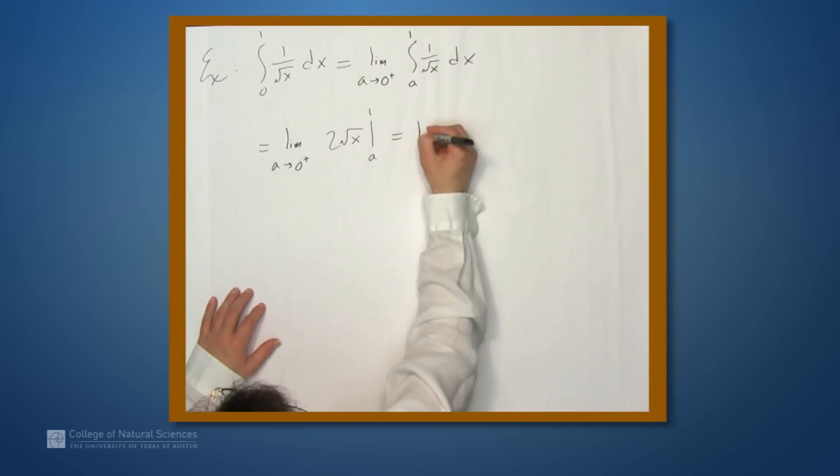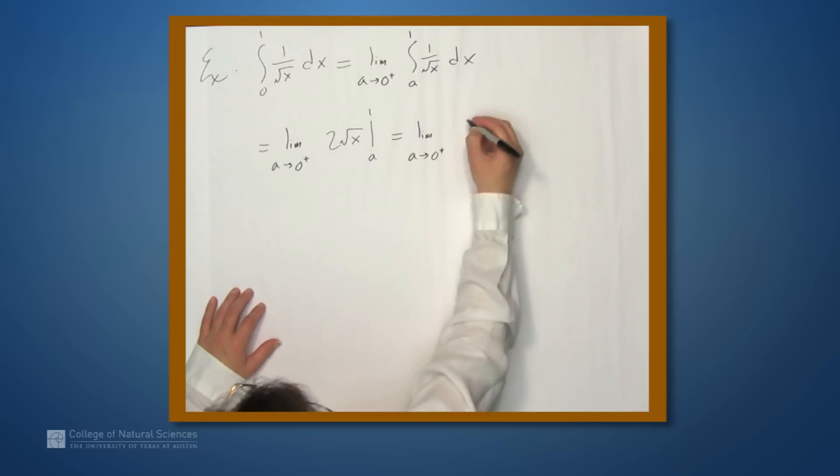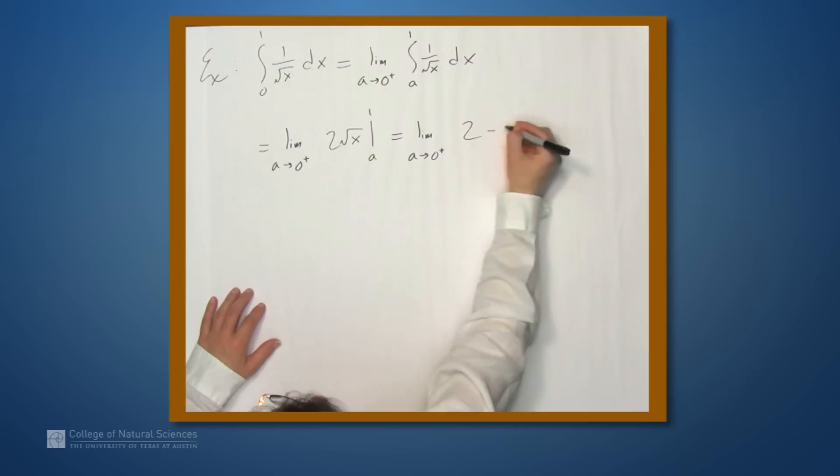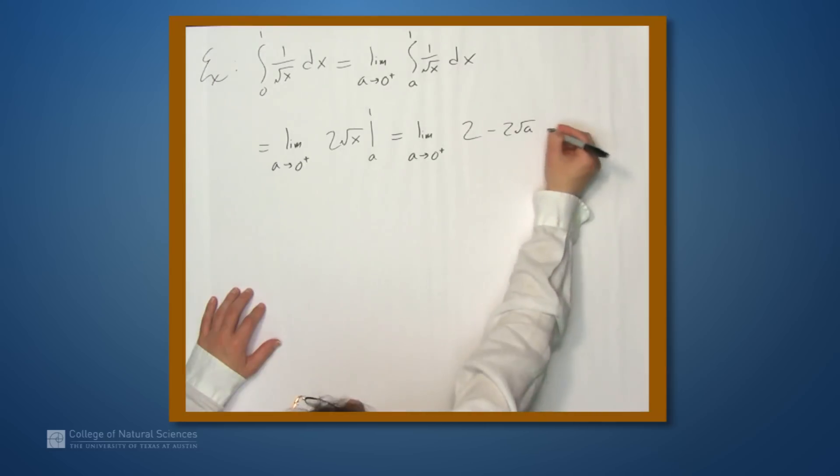So this is the limit as a approaches 0 from above of 2, right? Evaluate this at 1, and then subtract 2 times the square root of a. While we send a to 0, this term goes to 0. So this equals 2.